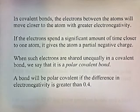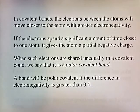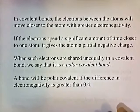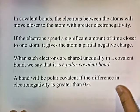In covalent bonds, the electrons between the atoms will move closer to the atom with greater electronegativity. If the electrons spend a significant amount of time closer to one atom, it gives that atom a partial negative charge. When electrons are shared unequally in a covalent bond, we call it a polar covalent bond. A bond will be polar covalent if the difference in electronegativity is greater than 0.4, meaning one atom is strong enough to pull the electrons towards itself a significant amount of the time.